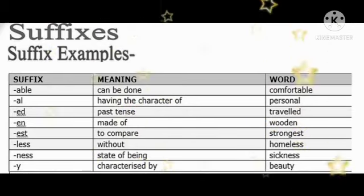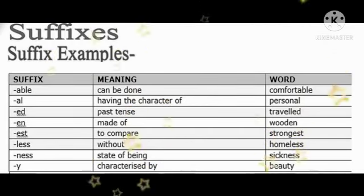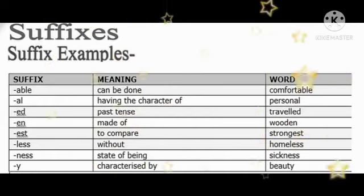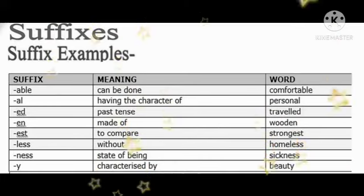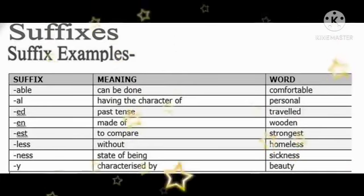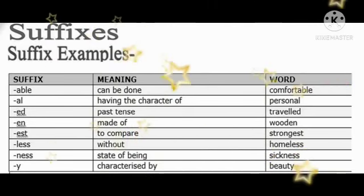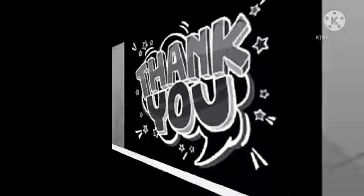In this picture I have given many other examples of suffix words. Our first word is comfort — adding the suffix 'able' at the end gives comfortable, meaning can be done. Our next word is person — adding suffix 'al' gives personal. The next word is travel — adding 'ed' as a suffix gives traveled, meaning the past tense. There are many more examples in this table — you can go through them. Thank you.